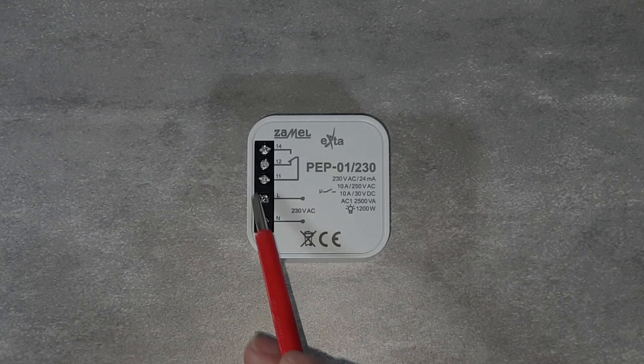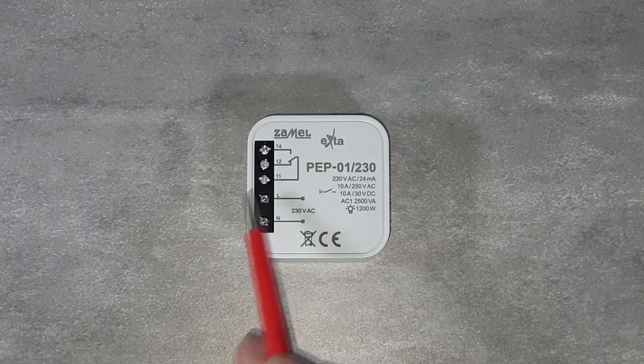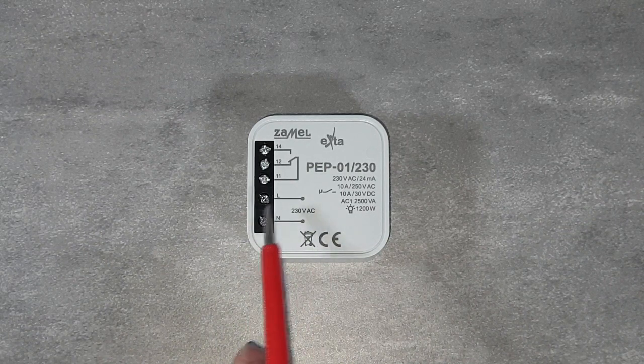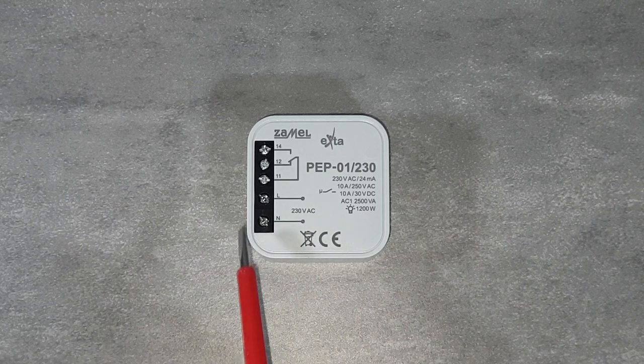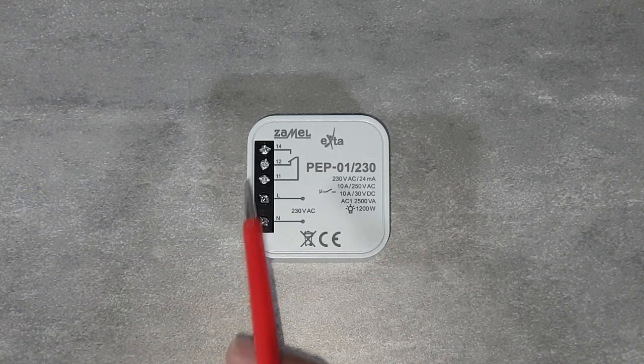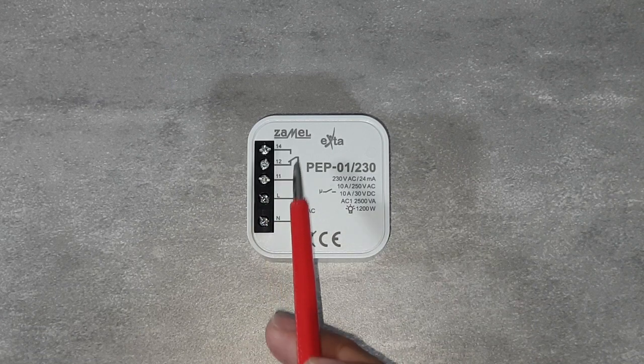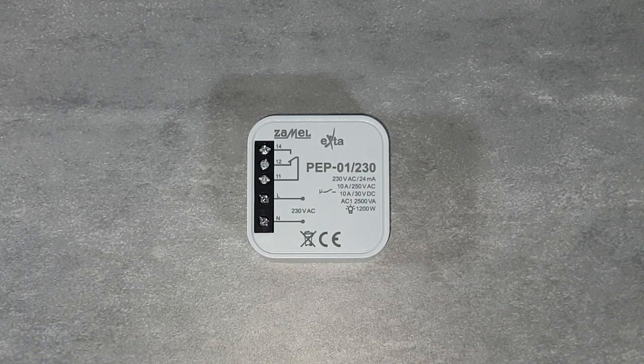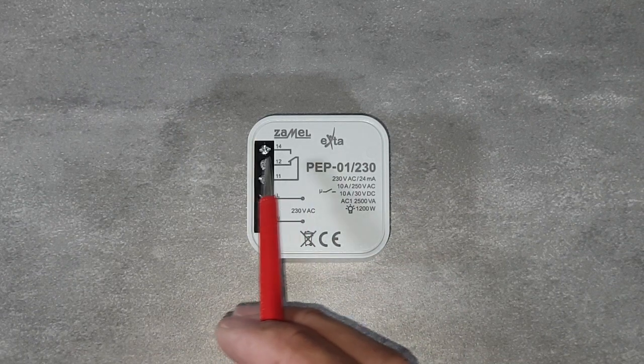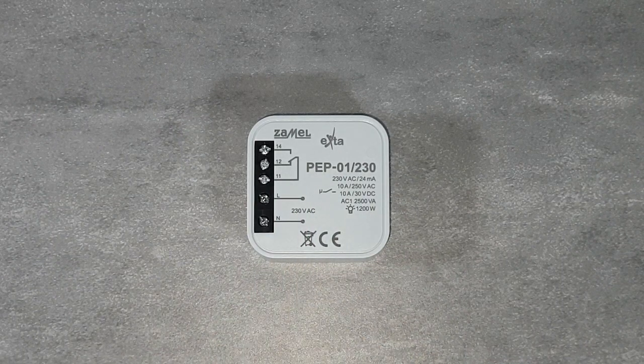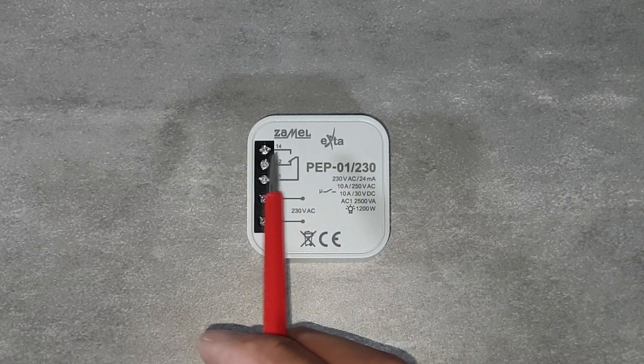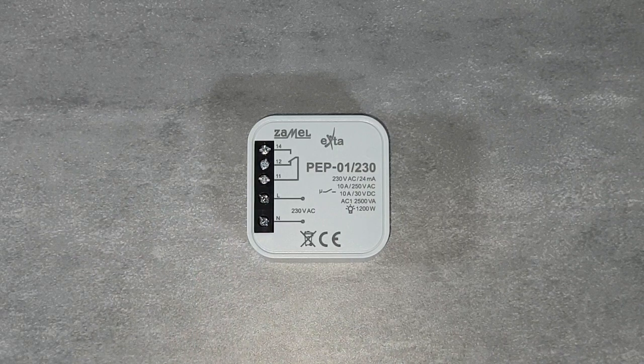The relay has following terminals. L, used to power supply by phase potential signal. N, used to power supply by its neutral potential signal. Terminal 11 is the NONC relay input. Terminal 12 is a normally closed terminal of the NONC relay. Terminal 14 is a normally open terminal of the NONC relay.